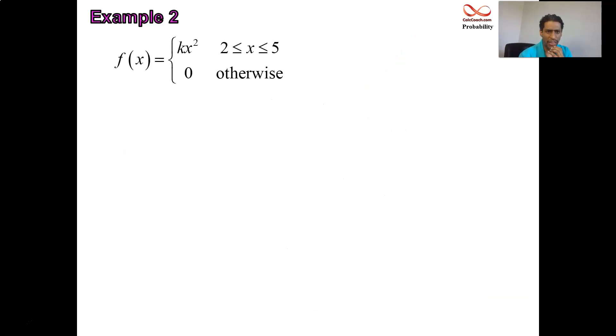All right. Yeah, let's go one more example. I know it's getting close to the 10-minute mark, but here's another function: kx squared from 2 to 5 and 0 otherwise. What's the value of k that would make this a probability density function? It's a parabola, right? So we don't want it to be a negative coefficient on x squared, so make sure that k is greater than or equal to 0. If it's a negative coefficient on x squared, then it's going to dip below and violate rule number one for being a probability density function.